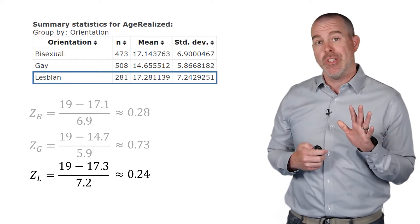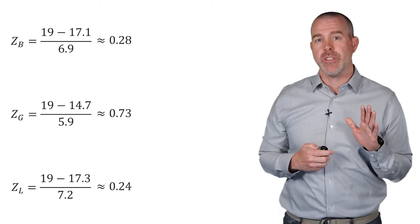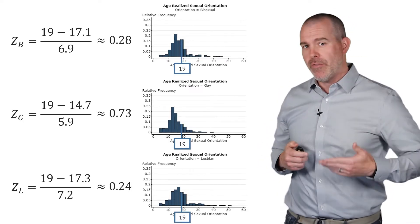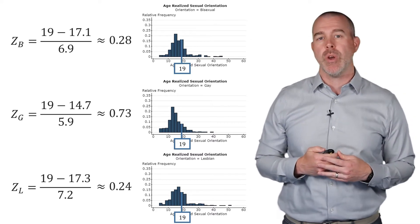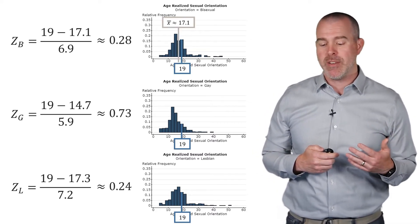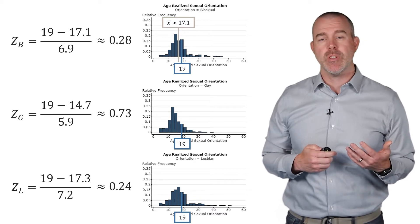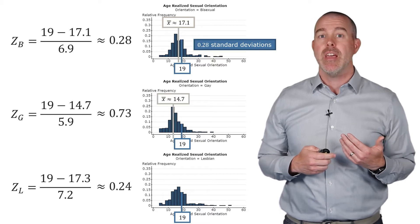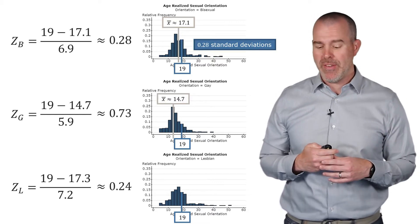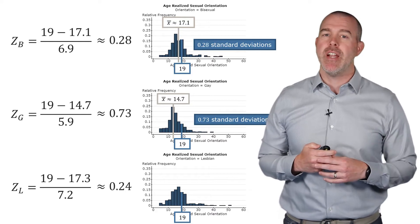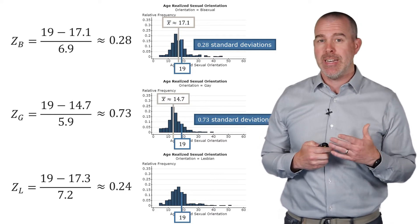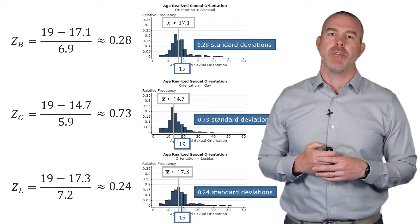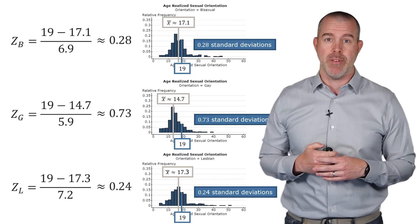Let's see what this looks like on a visual. I've got the Z scores here, and let's get the histograms up for all of these. Here's our 19 for all three of those different sexual orientations. If we put the mean up for each of them, the mean for bisexual is 17.1, so our value is 0.28 standard deviations above that. For those who are gay, the mean is 14.7, so that's 0.73 standard deviations above the mean. And for lesbian, the mean is 17.3, so our observation is 0.24 standard deviations above the mean.